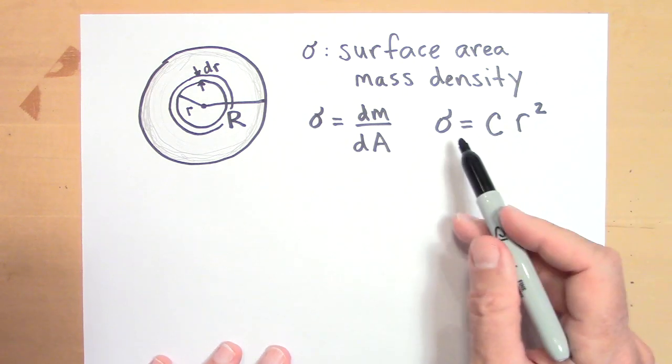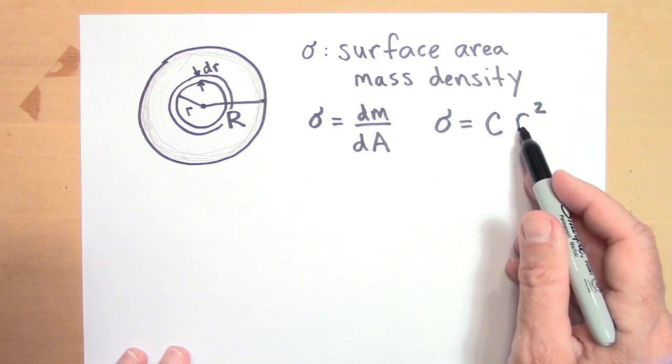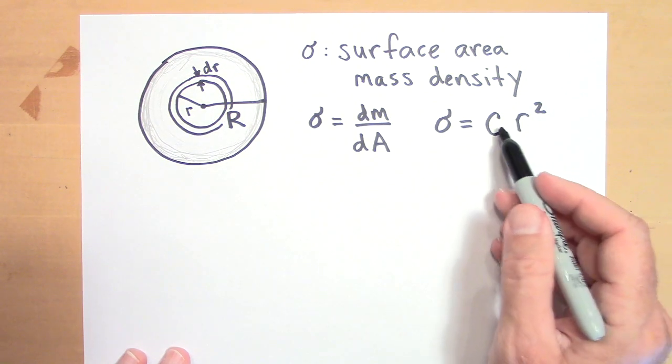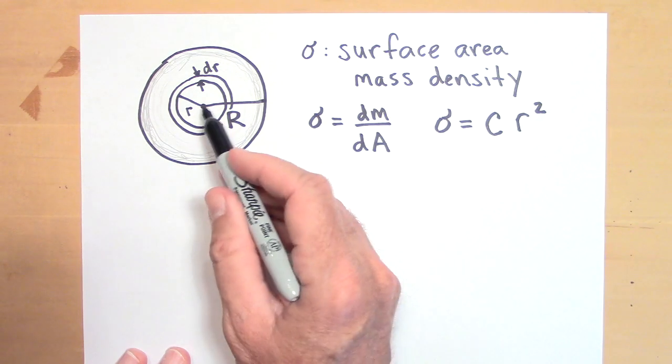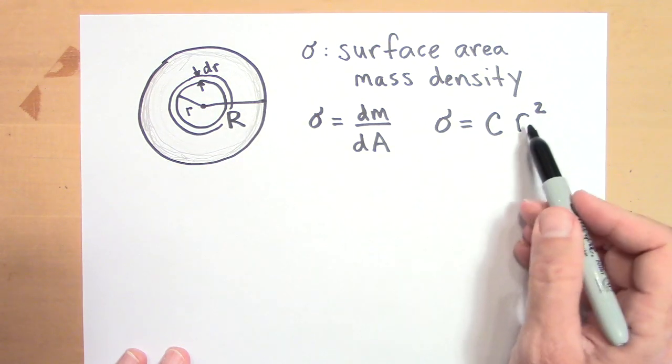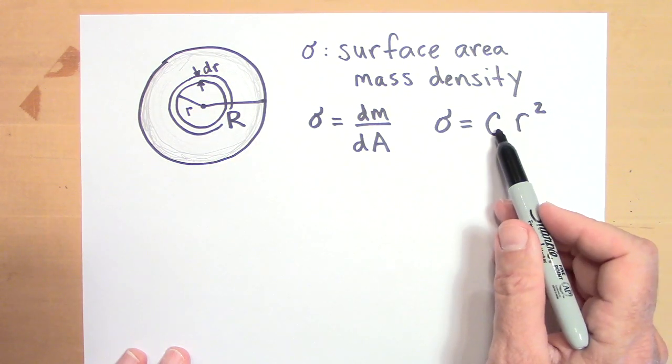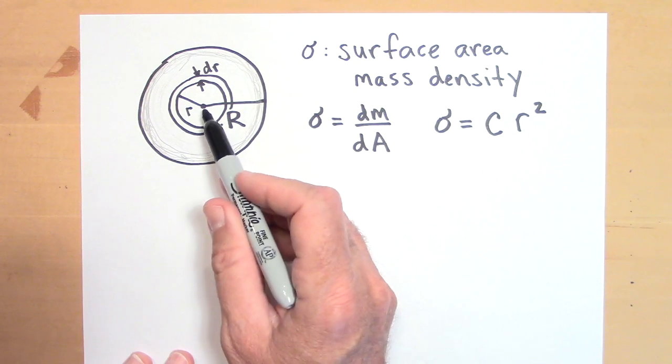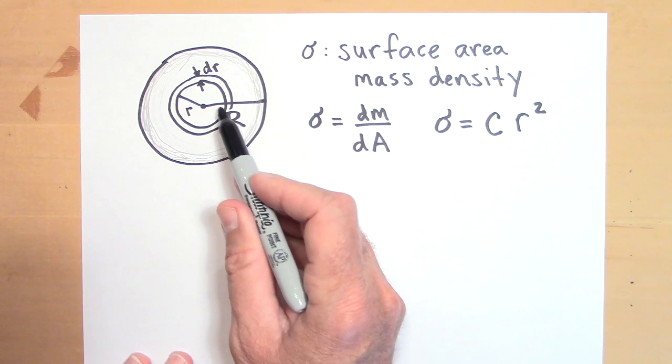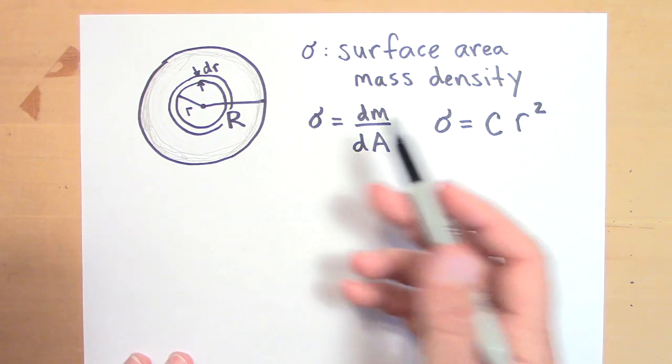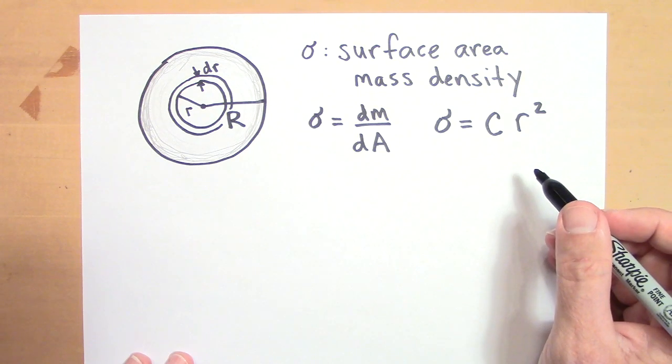And we're just making this up. For this problem, I'm choosing a very simple relationship between sigma and how far out you go. So C is a positive constant, and R is going to be how far from the center you are. So if you put a zero in for R, that puts you at the center. And then when you multiply zero times C, you get that the mass density is zero. So there's no mass at the center. And then as you go out, the mass density gets greater and greater, and it gets greater by a lot because of the squared term.